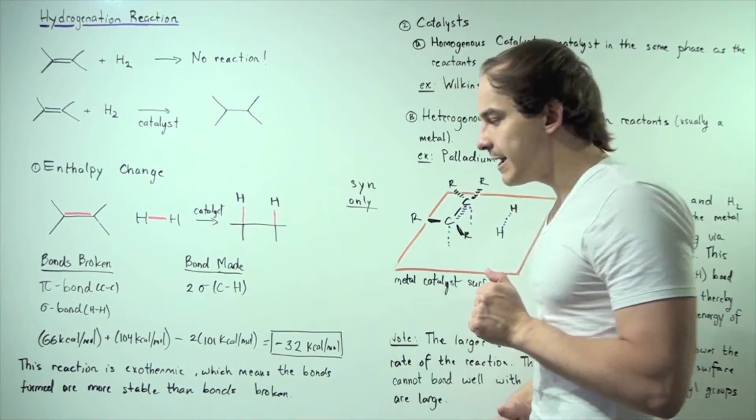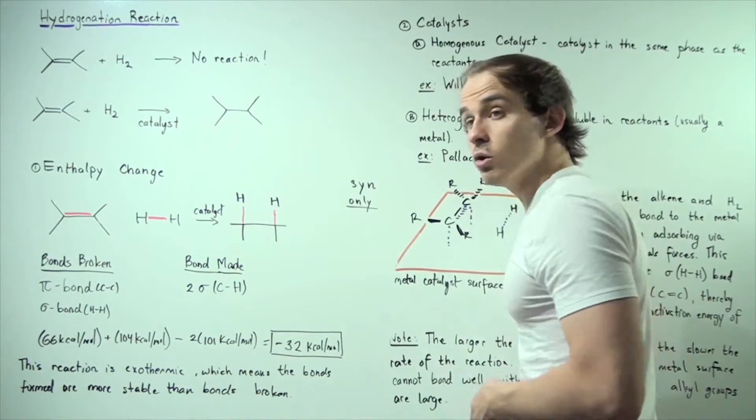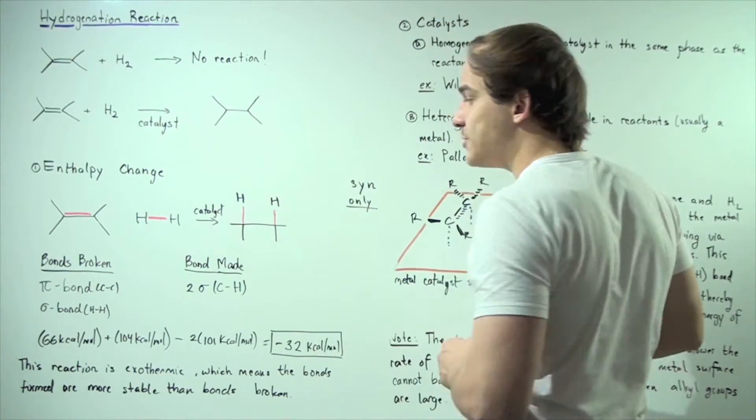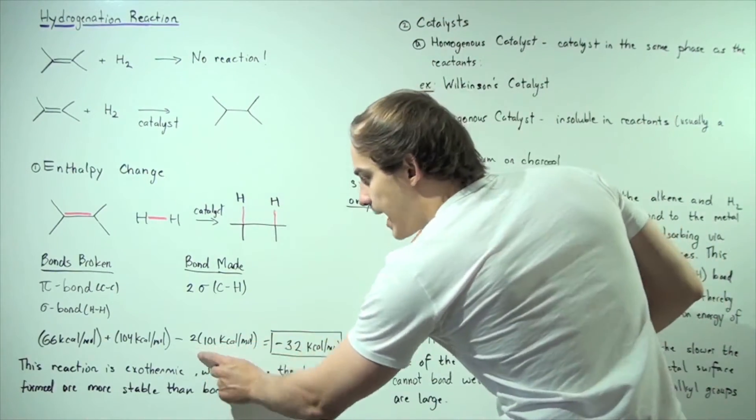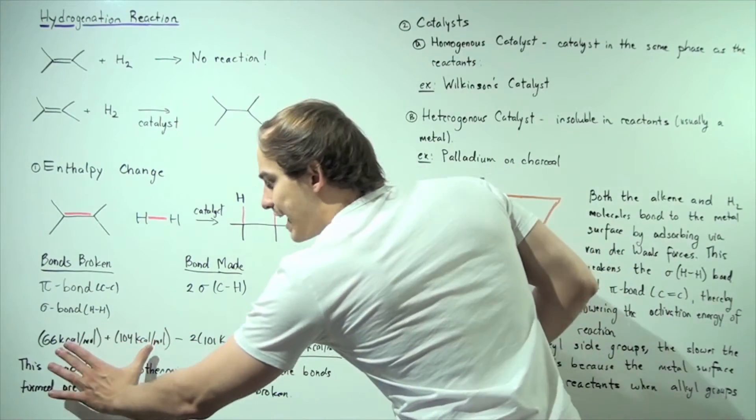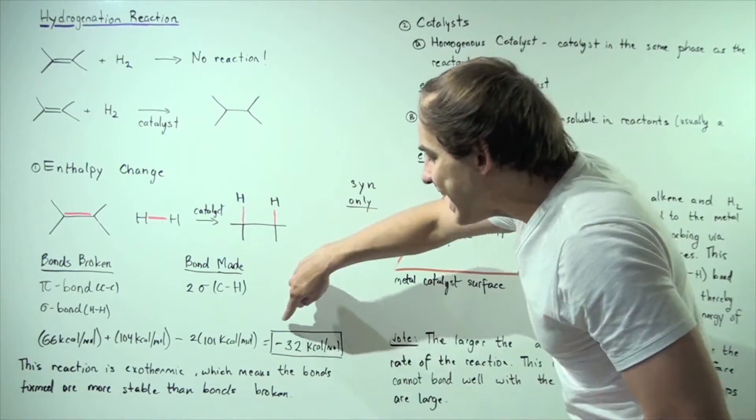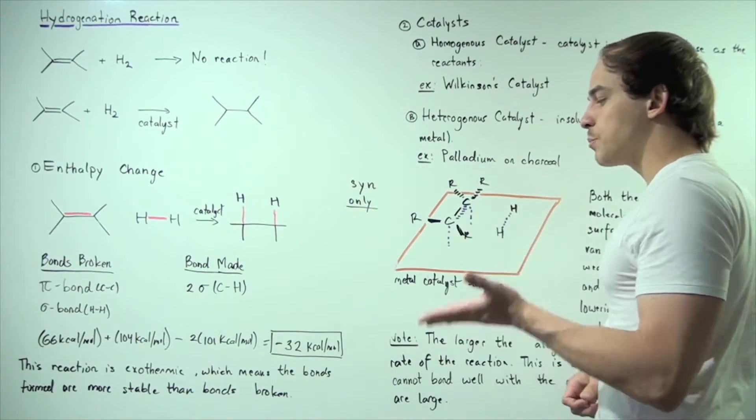At the same time, we have 101 kcal per mole of energy being released per one of these carbon H sigma bonds. So two times this number. So we add these two numbers up and subtract this number and we get negative 32 kcal per mole.